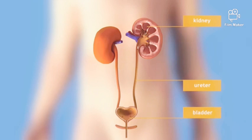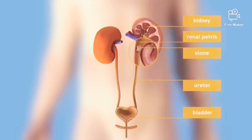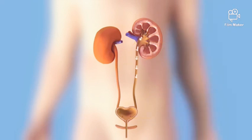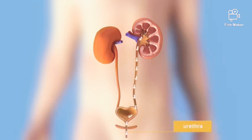The renal pelvis is the area where the kidney attaches to one of the ureters. Urine flows from the kidney through the ureters into the bladder. When emptying your bladder, the urethra transports the urine from the bladder to the outside of the body.